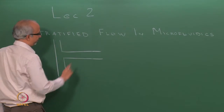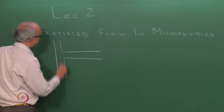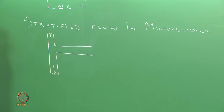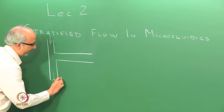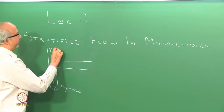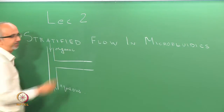We will consider a system which has a T-shape, with two inlets through these two limbs. The view I am drawing is the view of the channel as seen from the top. The T-junction is placed horizontally on the table, so the two fluids are flowing side by side — an aqueous phase and an organic phase.